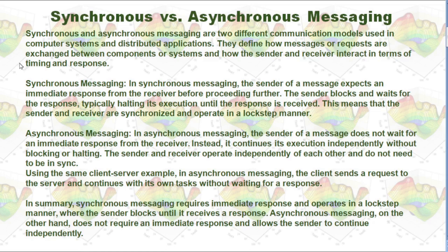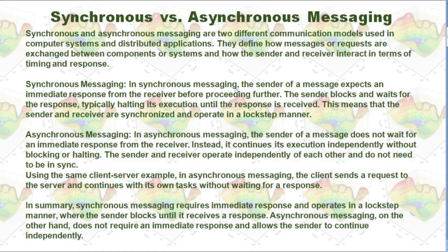Synchronous and asynchronous messaging are two different communication models used in computer systems and distributed applications. They define how messages or requests are exchanged between components and how the sender and receiver interact in terms of timing and response. In synchronous messaging, the sender expects an immediate response from the receiver before proceeding. The sender blocks and waits, halting its execution until the response is received, meaning the sender and receiver are synchronized and operate in a lockstep manner.